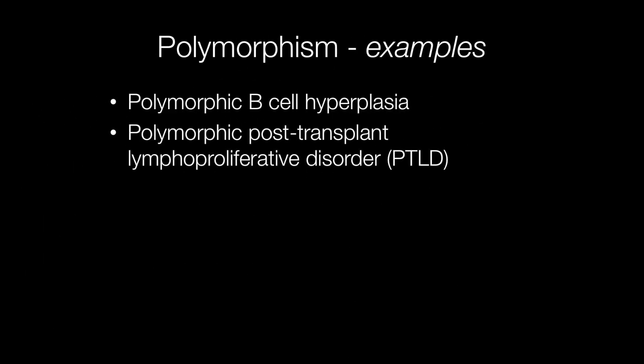A couple of pathological conditions characterized by polymorphism include polymorphic B-cell hyperplasia, which is a change seen in infectious mononucleosis, and polymorphic post-transplant lymphoproliferative disorder, or PTLD.